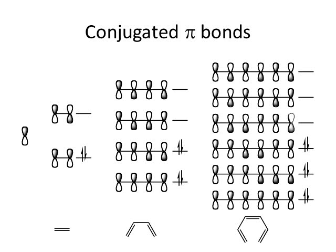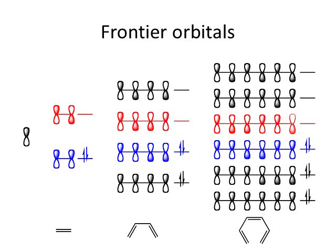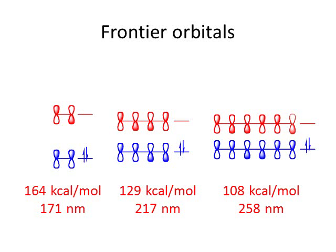When we fill electrons into these pi orbitals — in ethene the two pi electrons fill the lowest energy pi orbital; in butadiene four pi electrons fill the two lowest; in hexatriene six electrons fill three orbitals. What we're really interested in are the frontier orbitals. With four p orbitals together, the HOMO and LUMO are closer together than with two. With six, the HOMO and LUMO are even closer together — so the gap gets smaller with increasing conjugation.